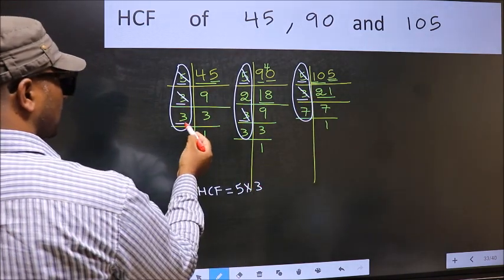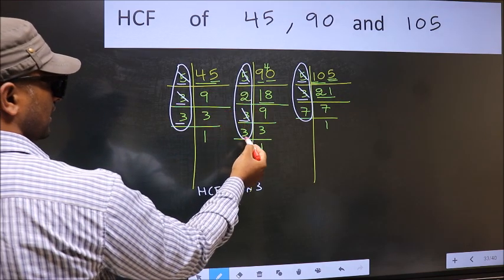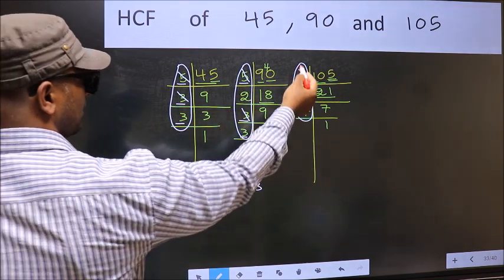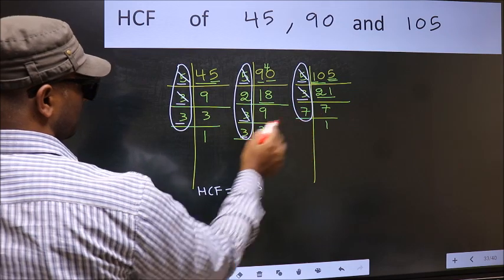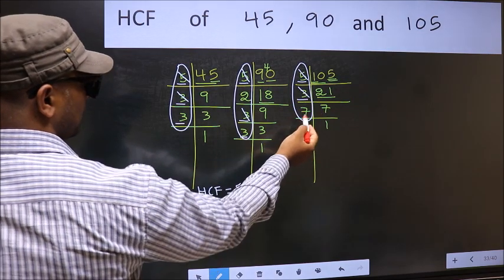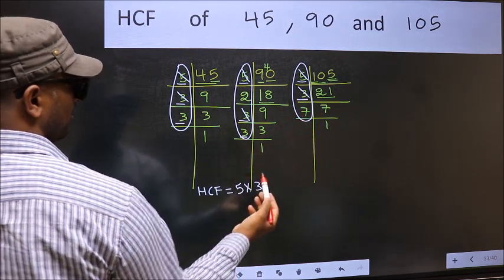Next number 3. Do we have 3 here? Yes. Go to the next place. Do we have 3 here? No. 3 is not present in all the 3 places, so we cannot write here.